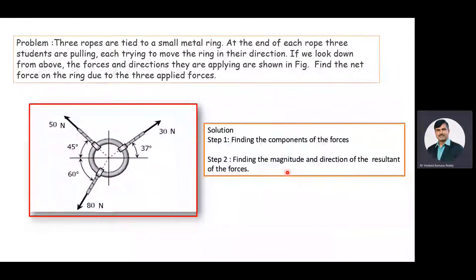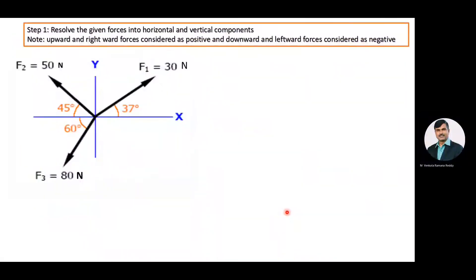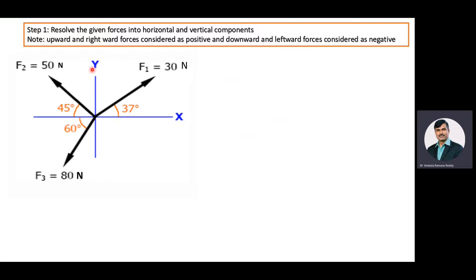Now we will move towards step one. We will resolve the given forces: the 30 Newton force making an angle of 37 degrees with the x-axis, the 50 Newton force making an angle of 45 degrees with the x-axis, and the 80 Newton force making an angle of 60 degrees with the x-axis. All three forces are outward forces. We are considering rightward and upward forces as positive, and leftward and downward forces as negative.